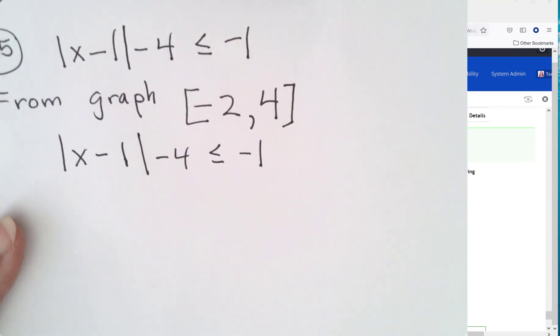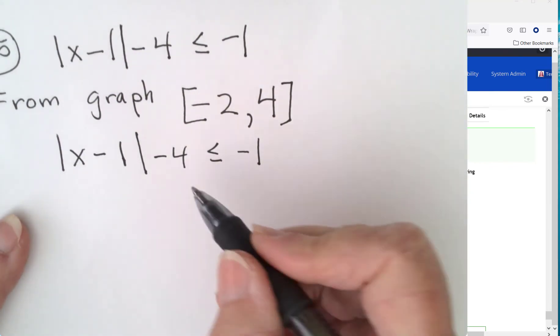Remember step 1 is isolate your absolute. So get this 4 off. You're going to add a 4.